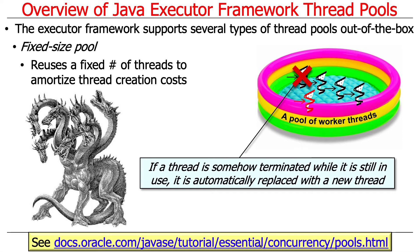If a thread somehow terminates while in use — like it hits a null pointer exception — then the Java framework is smart enough to recognize that there were supposed to be four threads, one of them blew up, and it creates a new one to keep it at four threads in steady state. It's kind of like the hydra from Greek mythology: if you cut off a head, a new one grows back. Or maybe a starfish leg is a better example, since it grows back if cut off.